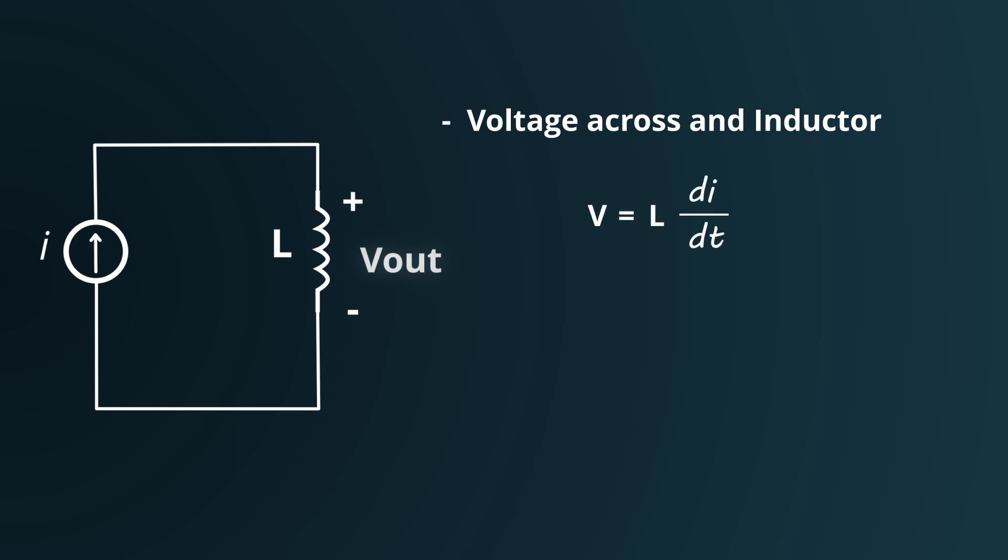The voltage drop across the inductor is equal to the product of its inductance, L, and the derivative of the current, I, with respect to time.